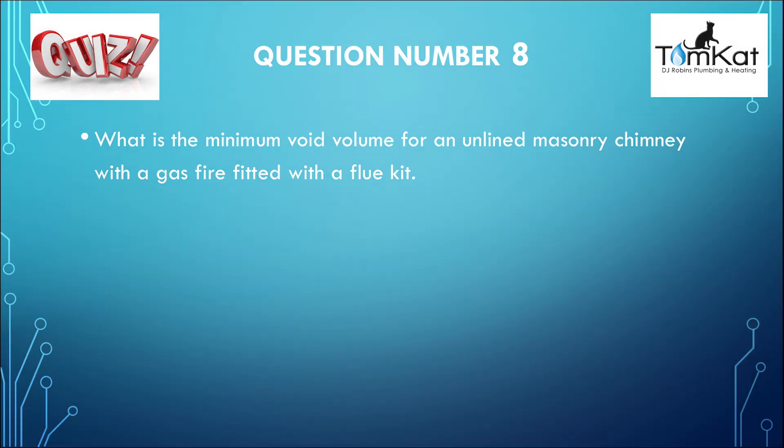Now the answer for question number eight: what is the minimum void volume for an unlined masonry chimney with a gas fire fitted with a flue kit? The answer was C — 12 decimetres cubed. That was the answer for number eight.